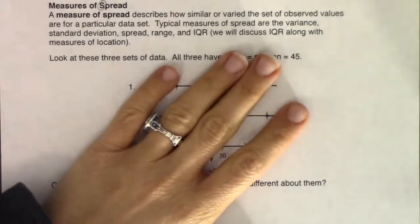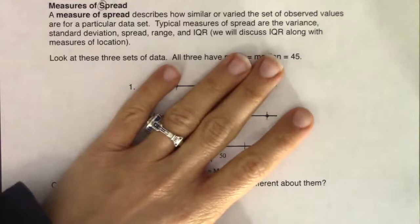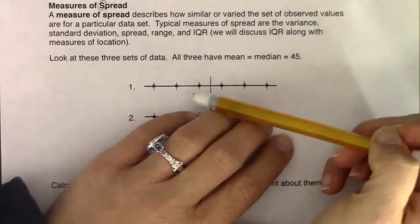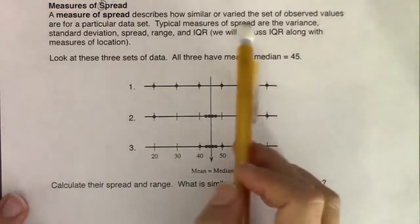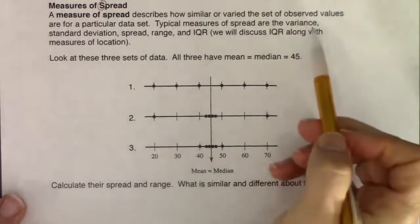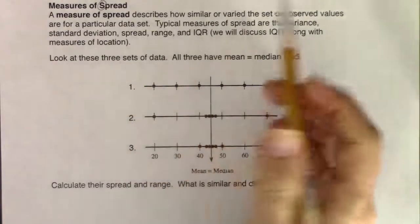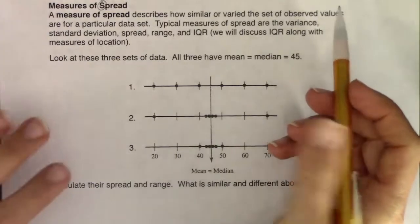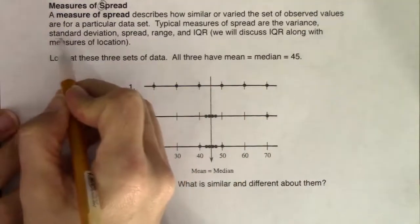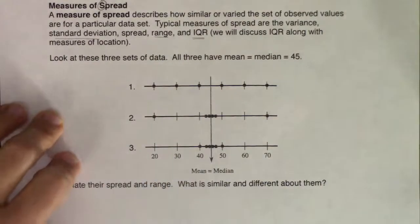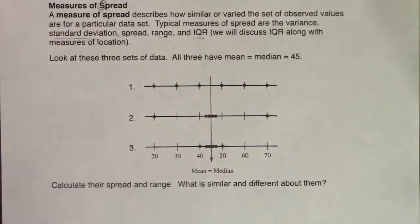We'll discuss IQR when we talk about measures of location, so IQR will pop up in both spread and location. We have five measures of spread in this class: variance, standard deviation, spread, range, and IQR. You only need to quote me one of them. My personal favorites are standard deviation and range — I'm a big fan of IQR as well. I usually don't quote spread or variance, though I could.